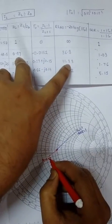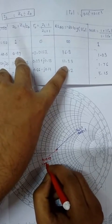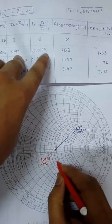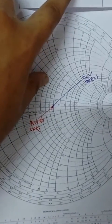You can see here before 1.0, you got this 0.97. ZL is equal to 0.97 and you have calculated this SWR. It's around 1.03. You can verify it.